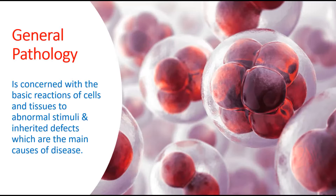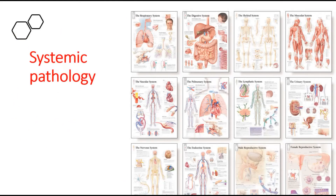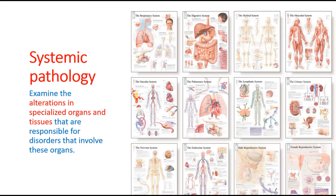In general pathology, you are going to study the basic reactions of cells to stress and injury, cell death, types of cell death, inflammation, healing, and genetic diseases. In systemic pathology, you are going to study diseases of each system — respiratory, cardiovascular, gastrointestinal, urinary system, and so on.